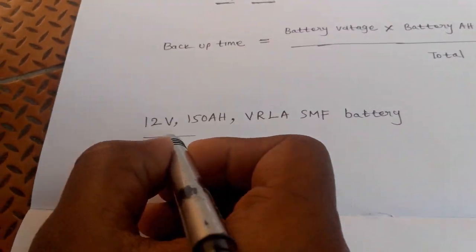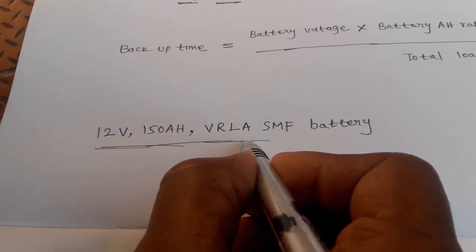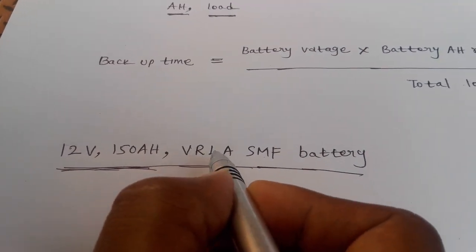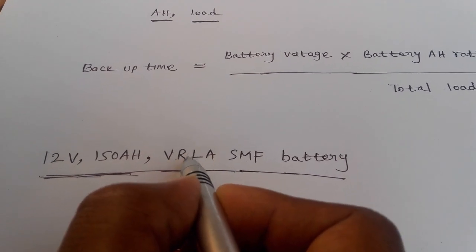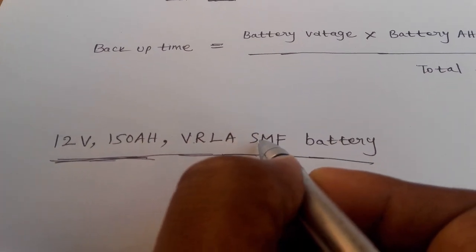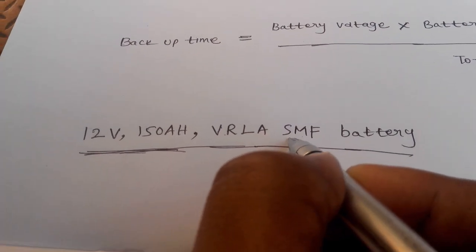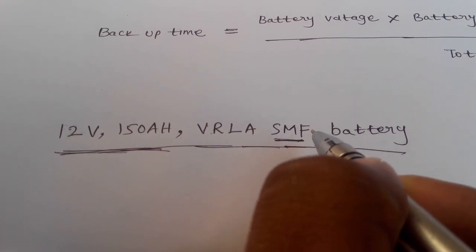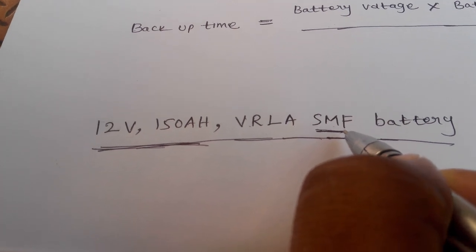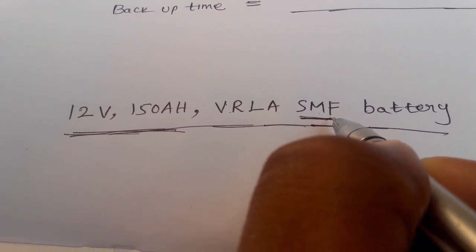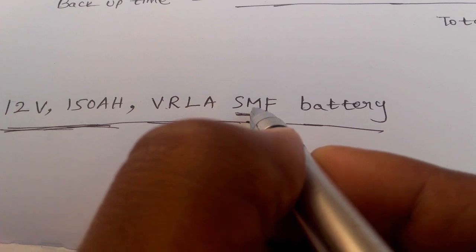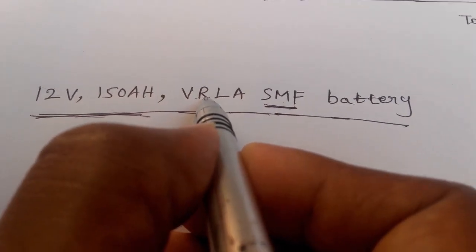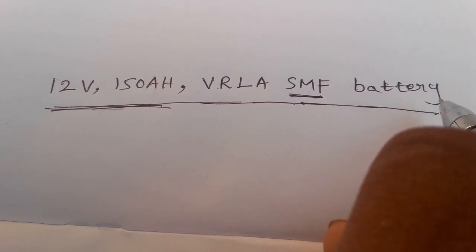For this example, we'll use a 12V 150Ah VRLA SMF battery. VRLA stands for valve regulated lead acid. SMF means sealed maintenance free battery. This is a maintenance free battery that will last 3 to 4 years.